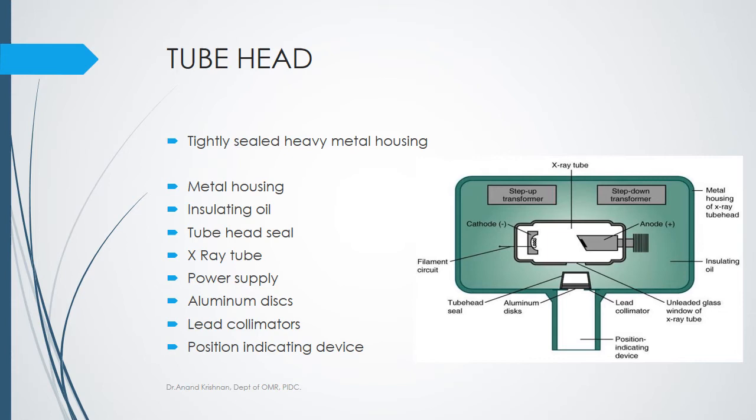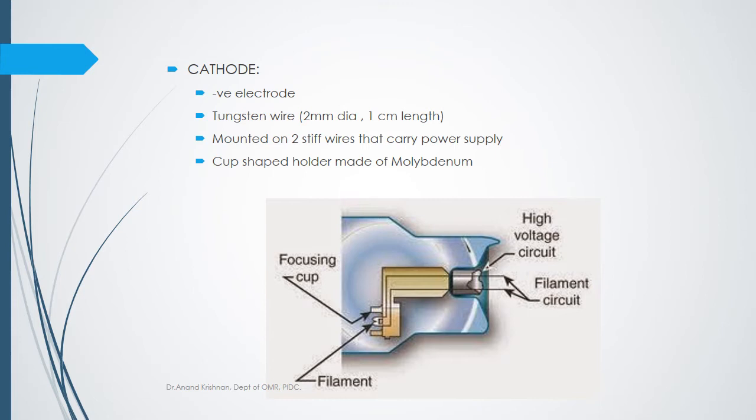Within the tube we have the negative cathode, the positive anode, and a lead glass housing within which the tube is kept in vacuum, because the presence of any air particles will influence the production of x-rays.